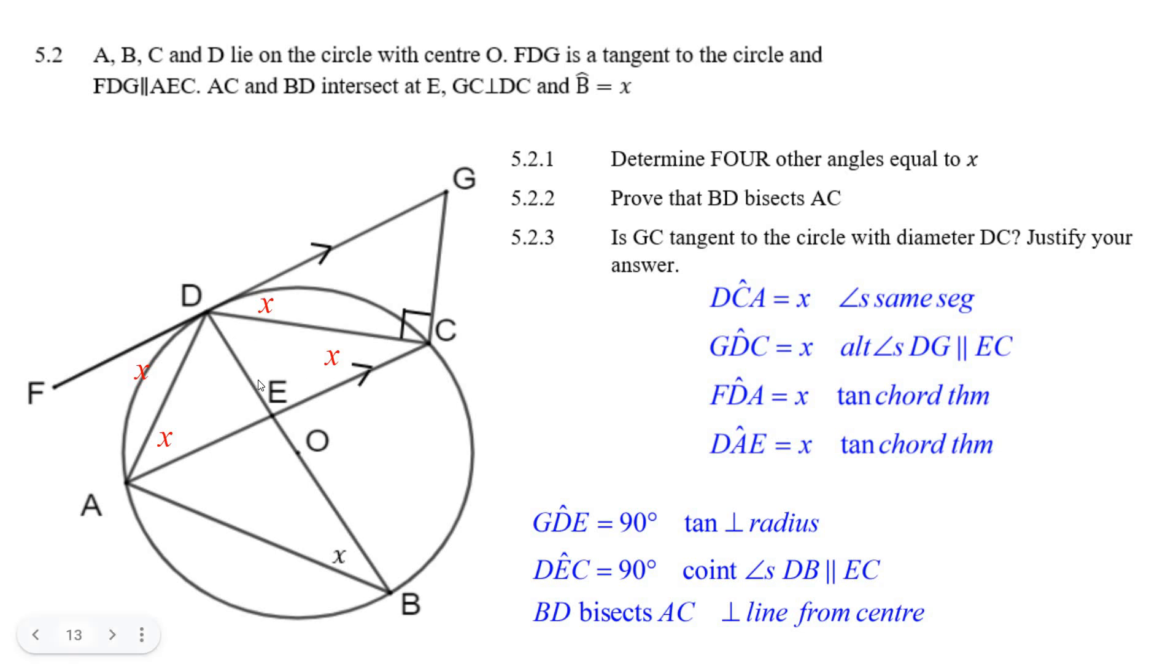Well, we've got parallel lines, so angle D, E, C must be 90 degrees because of cointerior angles, because it should say D, G is parallel to E, C. That should be D, G is parallel to E, C, not D, B.